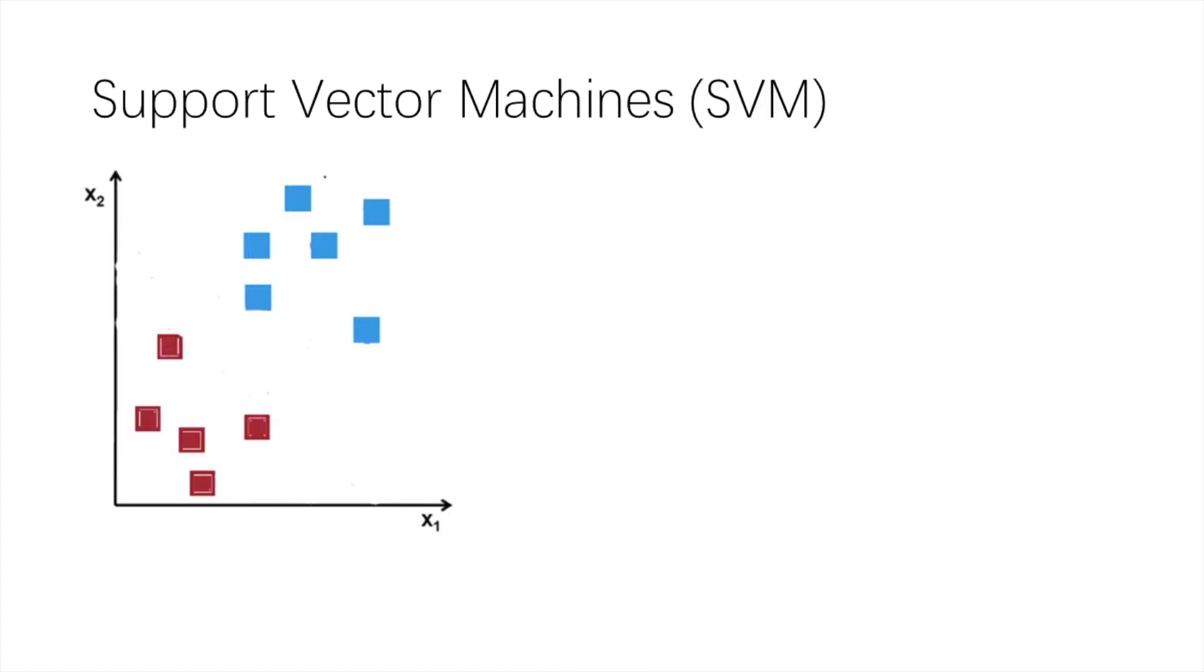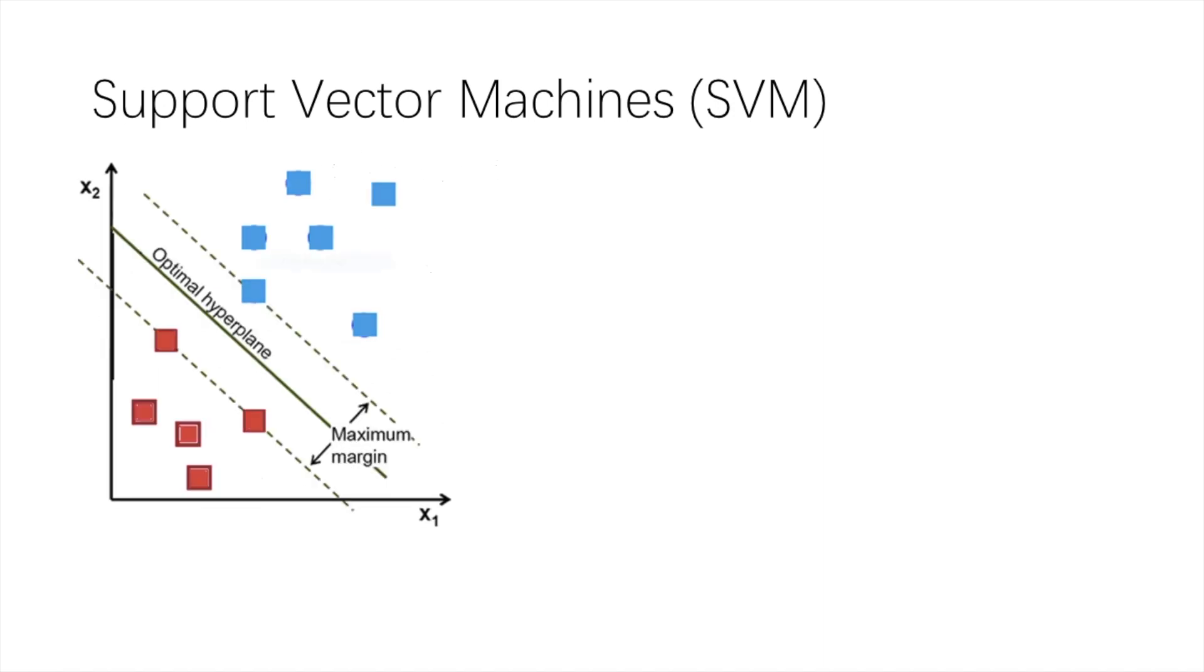Here let's look at a simple case. We want to teach a computer to separate blue squares from red ones. To do that we need to draw a hyperplane to separate them. Though many hyperplanes can be drawn, we want to pick the one with maximum margin.